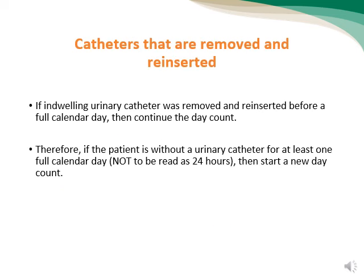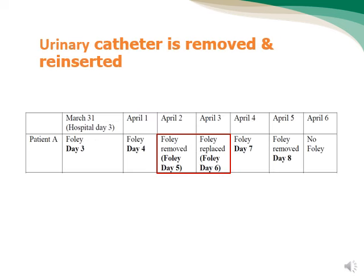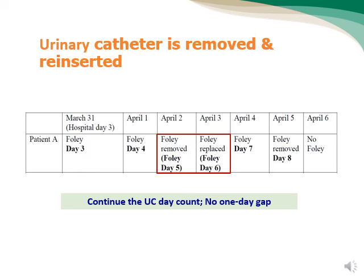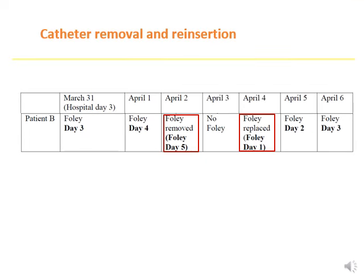For catheters that are removed and reinserted, a specific protocol applies. If an indwelling urinary catheter is removed and reinserted within less than a full calendar day, the day count continues uninterrupted. However, if the patient remains without a urinary catheter for at least one complete calendar day, a new day count begins. For example, if a catheter was removed on day 5 and reinserted on day 6, the count continues. But if patient B had his Foley catheter removed on April 2 (day 5), then had one full calendar day gap and had it replaced on April 4, a new count should begin.